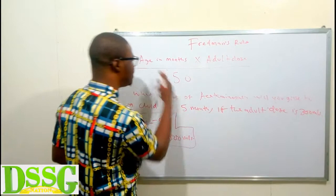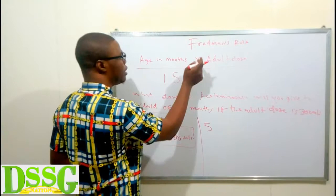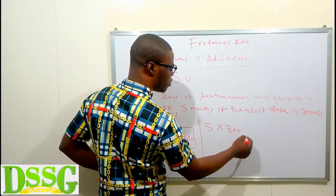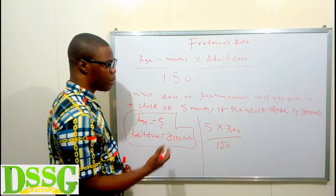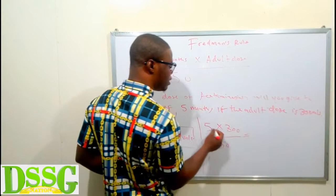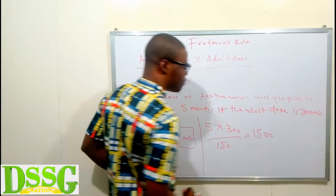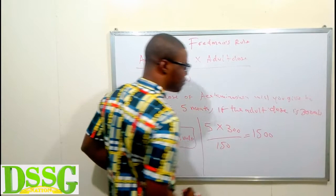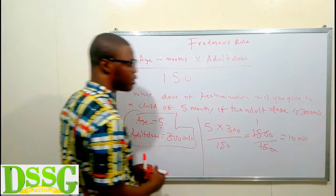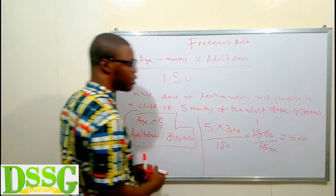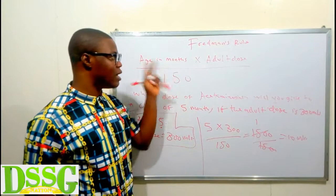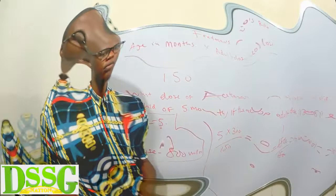Applying the formula: age in months is 5, multiplied by adult dose of 300, all over 150. So: 5 multiplied by 300 gives 1500, all over 150. Cancelling gives 10. The answer is 10 mils. You can verify with a calculator: 5 × 300 ÷ 150 = 10 mils. That is Fried's Rule.